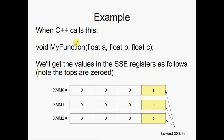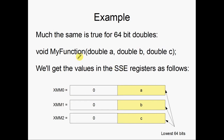Here's an example. When C++ calls a function that takes three floats, XMM0 will contain A, XMM1 will contain B, and XMM2 will contain C. All those values will be put into the lowest 32 bits of these registers — this is important — and the tops will be set to zero, or zero-extended. The same is true for 64-bit doubles: XMM0, 1, and 2 get A, B, and C in their lowest 64 bits, and the top is zeroed.